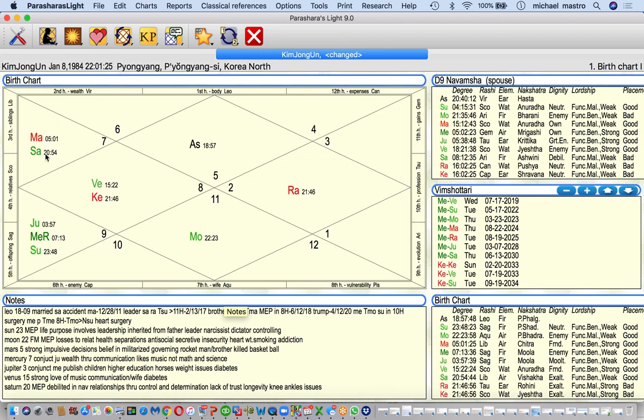He could, Saturn, he could wear a blue sapphire. Venus, he could wear a diamond, one carat diamond on the ring finger. Jupiter, he could wear yellow sapphire. Moon, we don't want to strengthen with the pearl, because we don't want to strengthen malefics. No Ketu, no hematite for Rahu or Ketu.